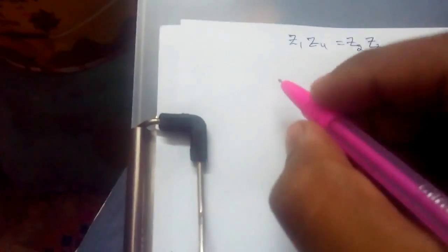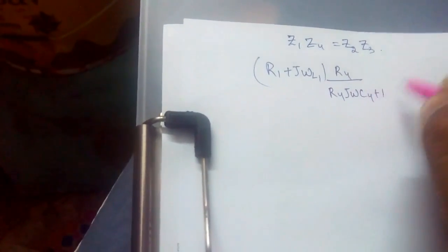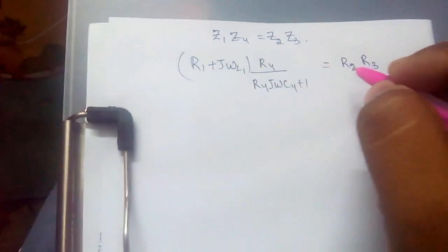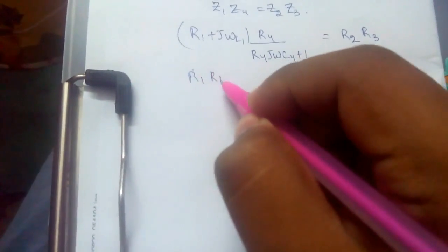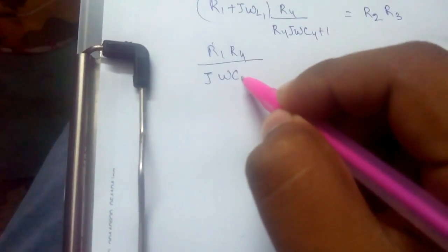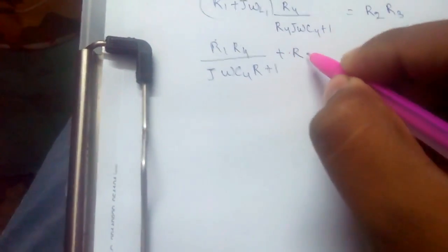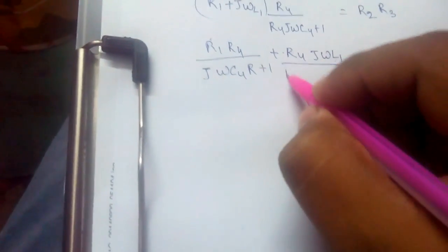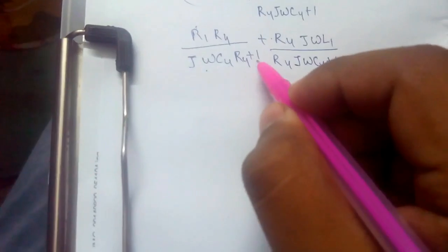In the equation Z1 Z4 equals Z2 Z3, we will get R1 plus j omega L1 into R4 by R4 j omega C4 plus 1 equals R2 R3. Further simplifying the equations, you would get R1 R4 by j omega C4 R4 plus 1, and plus R4 j omega L1 by R4 j omega C4 plus 1 as j omega C4 R4 plus 1 is common.